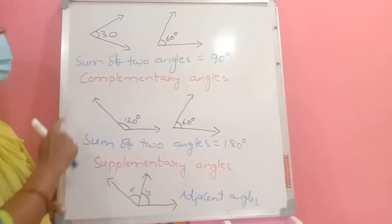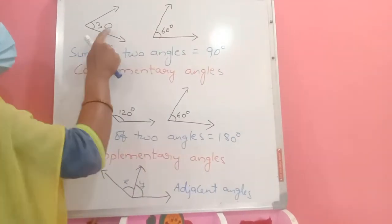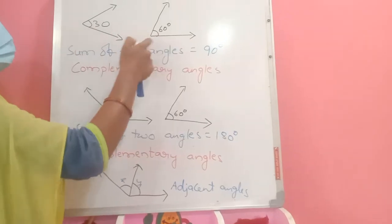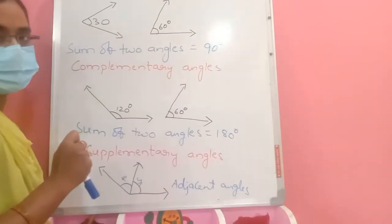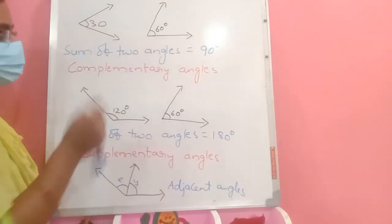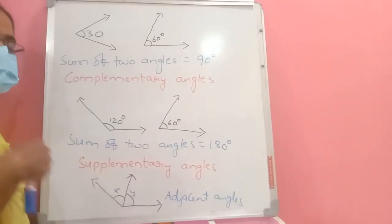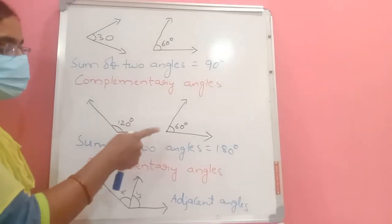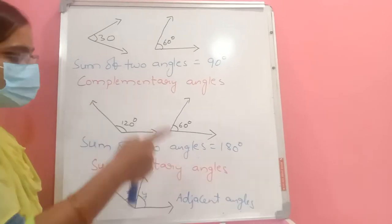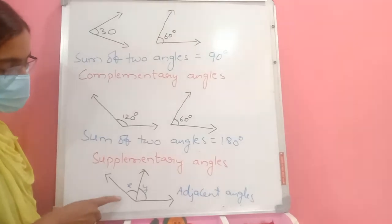For angles: if you have 30 degrees and 60 degrees, their sum is 90 degrees. If the sum of any two angles is 90 degrees, those two angles are called complementary angles. If two angles sum to 180 degrees — like 120 and 60 — that pair is called supplementary angles.